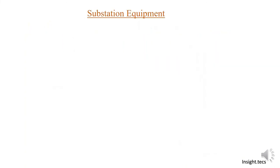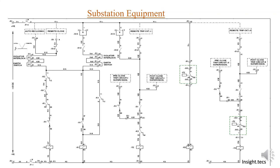Now let us understand some basic wiring of the circuit breaker. We will continue the breaker wiring in detail in the next videos, but for now let us understand a few parts: the remote close and trip, how TNC switches work, then there is a remote trip circuit one and a remote trip circuit two. This is a simple wiring overview of a circuit breaker — details will be covered in upcoming videos.